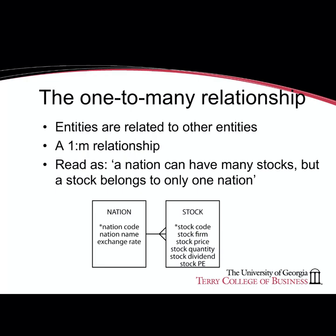In this video we will take a look at chapter 4 of the Watson text where we cover one-to-many relationships. In a previous video we discussed a single entity or a single table, but there are many occasions where there are several entities that need to be represented in a data model. The first type of relationship we want to learn about is known as a one-to-many relationship. In this case, a nation can have many stocks — there are two entities: a nation entity and a stock entity.